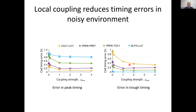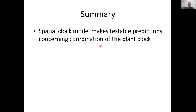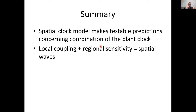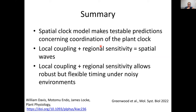To summarize, we hope that these types of spatial clock models can start to make testable predictions concerning the coordination of the plant's circadian clock. A combination of local cell-to-cell coupling plus different sensitivity to the environment can generate these spatial waves of clock gene expression that we observe. This local coupling and regional sensitivity could allow robust oscillations that filter out noise in the environment, but also allow flexible timing — still allowing the root tip to peak earlier than the rest of the root, or the shoot to run at a different time than the root or root tip.